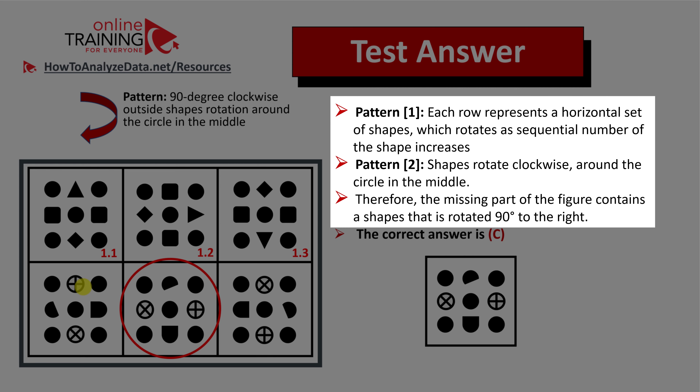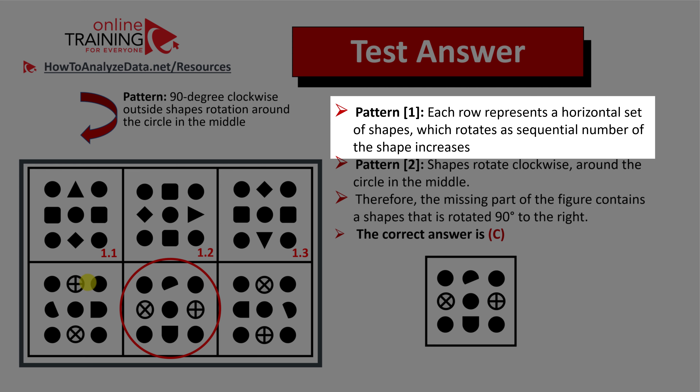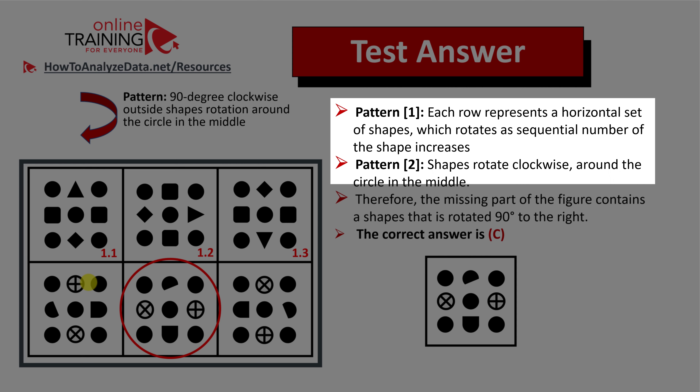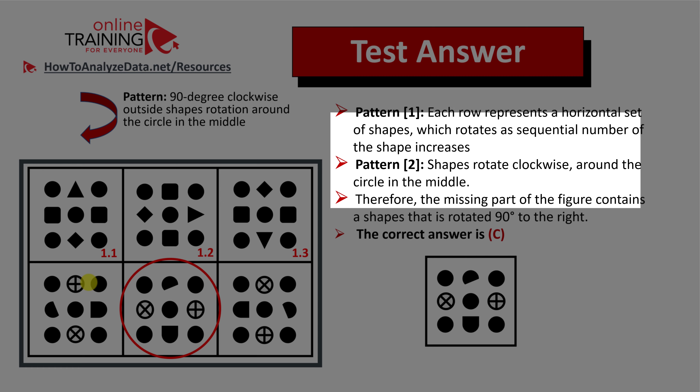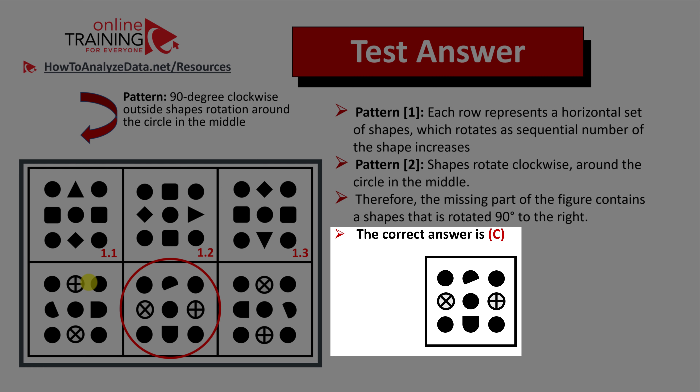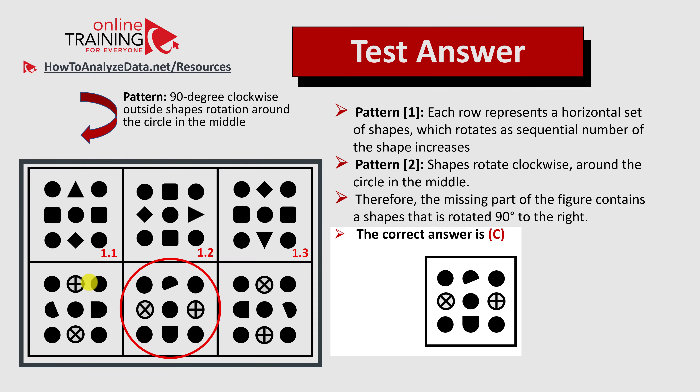Let's recap. There are two patterns in this question. The first pattern is that each row represents a horizontal set of shapes which rotates as the sequential number of shapes increases. The second pattern indicates that the shapes rotate clockwise around the circle in the middle. Therefore, the correct answer is choice C. Hopefully you've nailed this question and now know how to answer similar questions on the test.